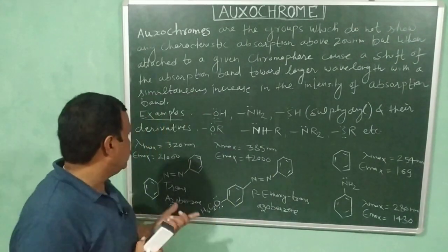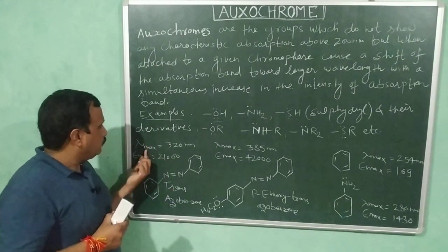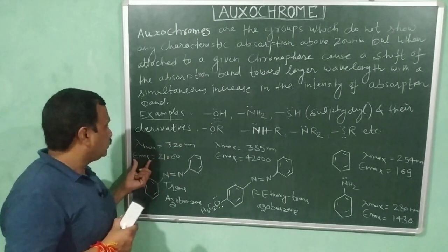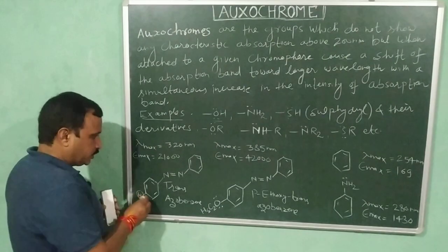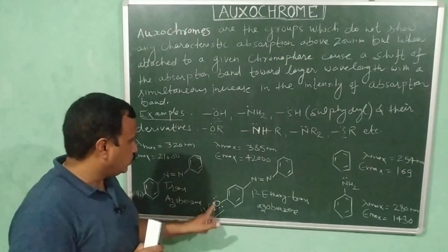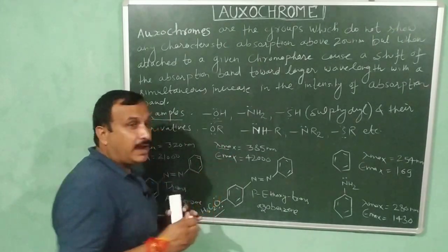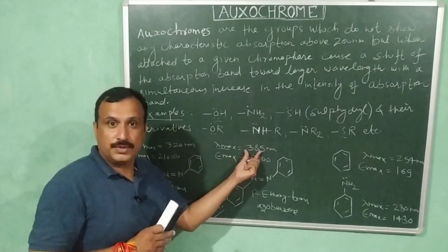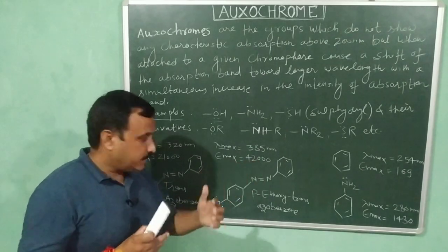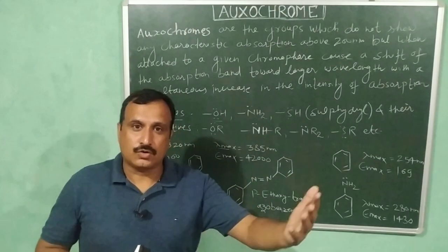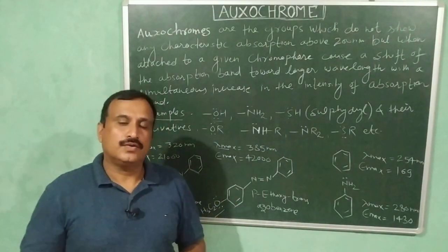Here are examples illustrating the effect of oxochromes. For transazobenzene, the lambda maximum is 320 nm and the molar extinction coefficient is 21,000. When the hydrogen at the para position is replaced by an ethoxy group (–OC₂H₅), the compound becomes para-ethoxy transazobenzene. The lambda maximum increases from 320 nm to 385 nm, and the molar extinction coefficient increases from 21,000 to 42,000. So this ethoxy group is acting as an oxochrome, causing a bathochromic shift and increasing the intensity of absorption.